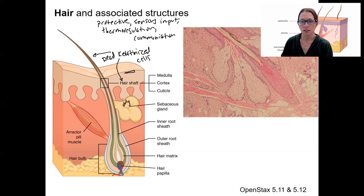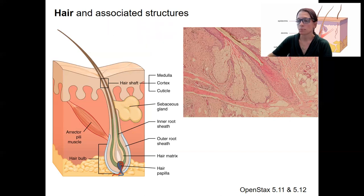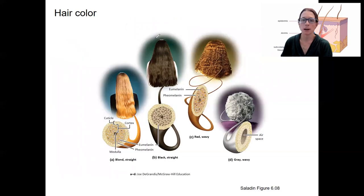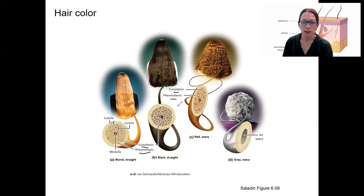Over here is a histology of a hair — we won't look at this one in detail, but these here are sebaceous glands and the hair bulb. Hair color is similar to skin color; it's determined by different types of melanin. These are cross sections of the hair, and you can see there's a cortex and medulla. There are different subtypes of melanin — eumelanin and pheomelanin — being the main types that contribute to different hair colors.